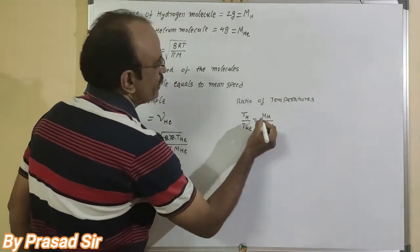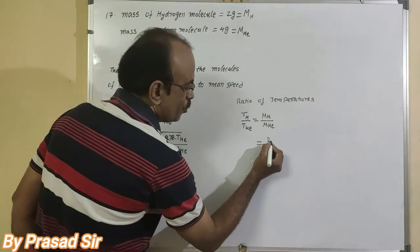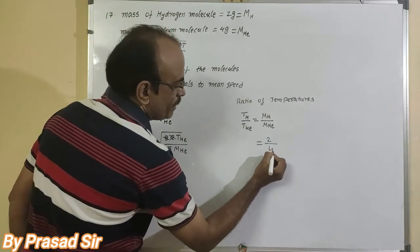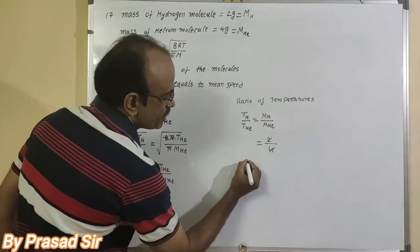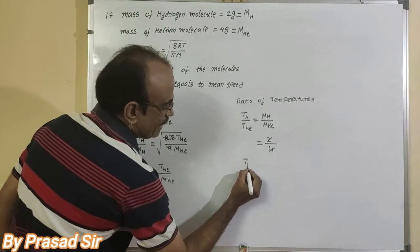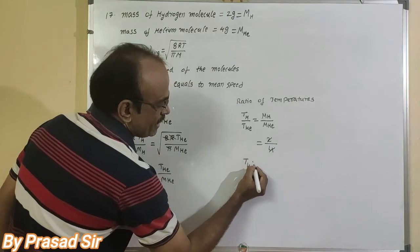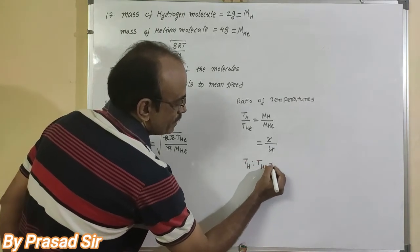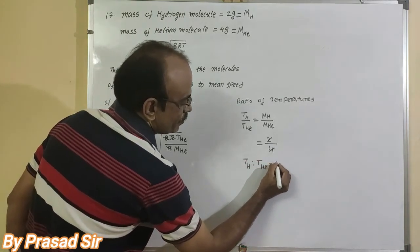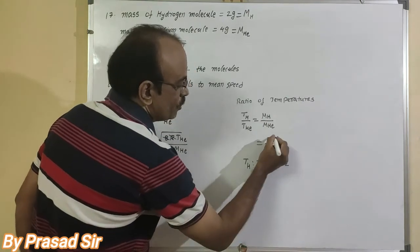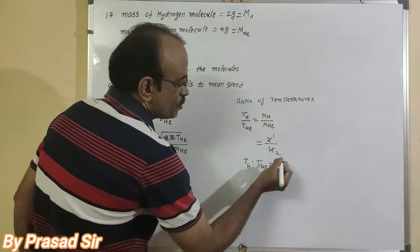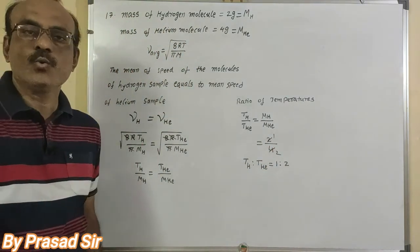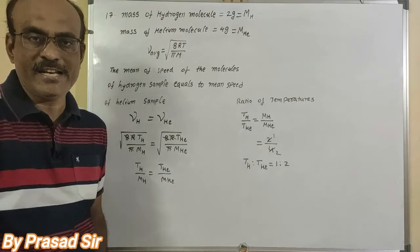So here, molecular weight of hydrogen is 2 and helium is 4. After cancellation, T_hydrogen : T_helium = 1 : 2. This is the solution for question number 17.